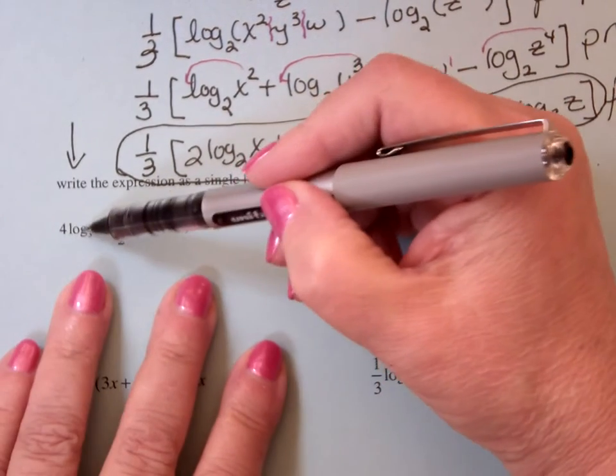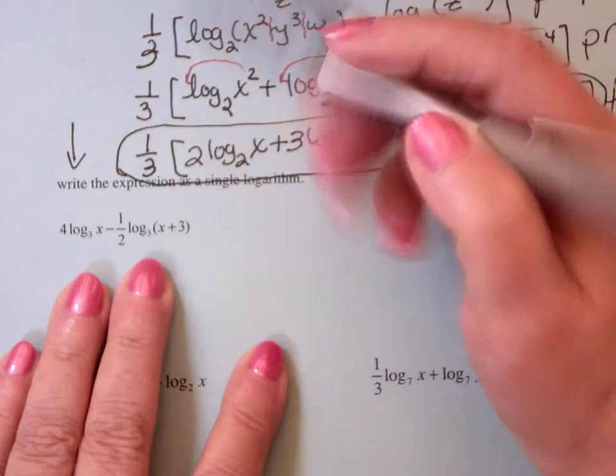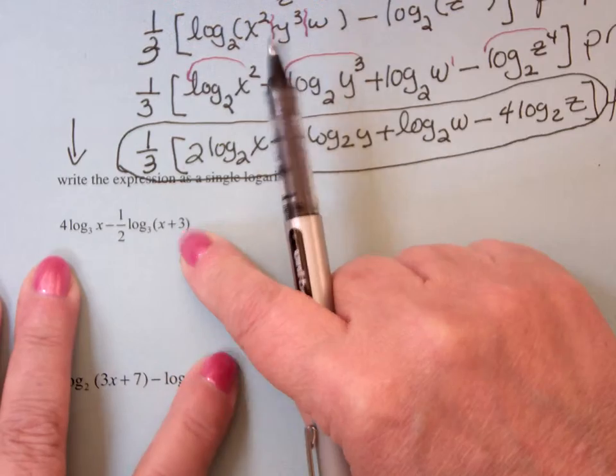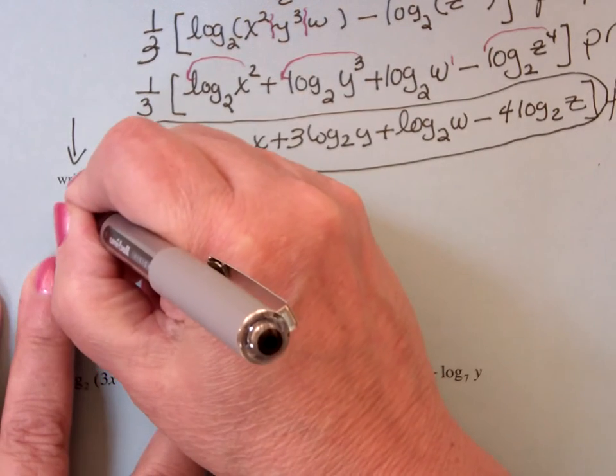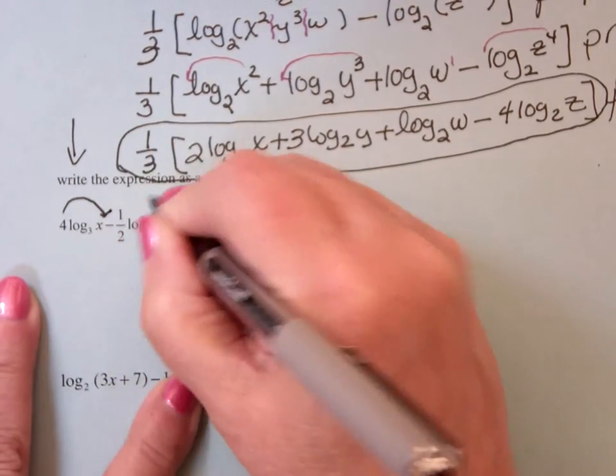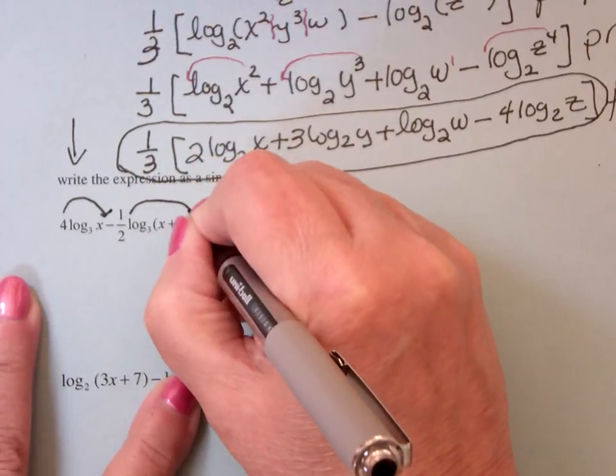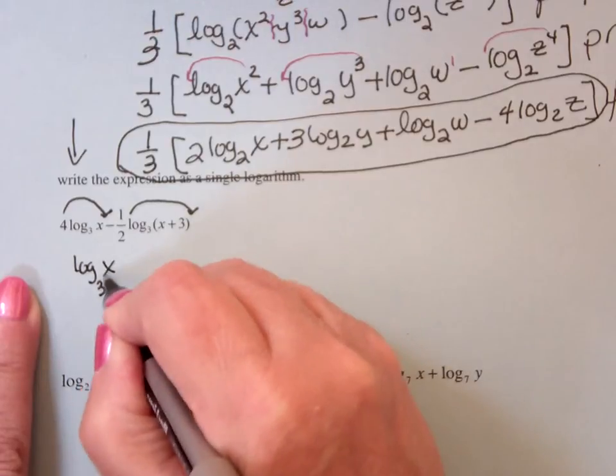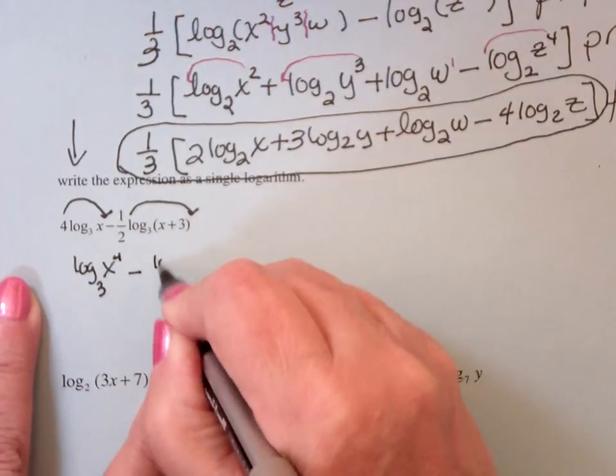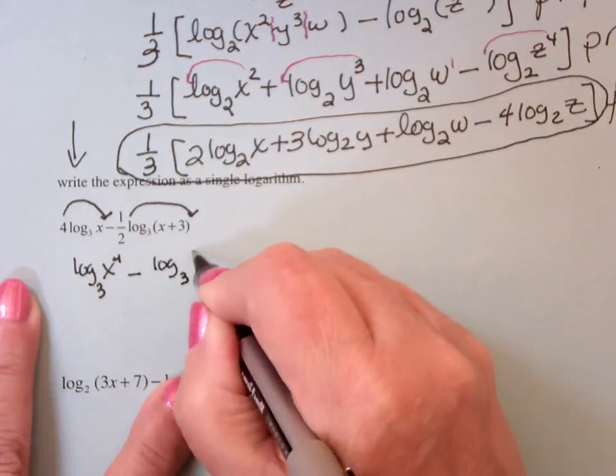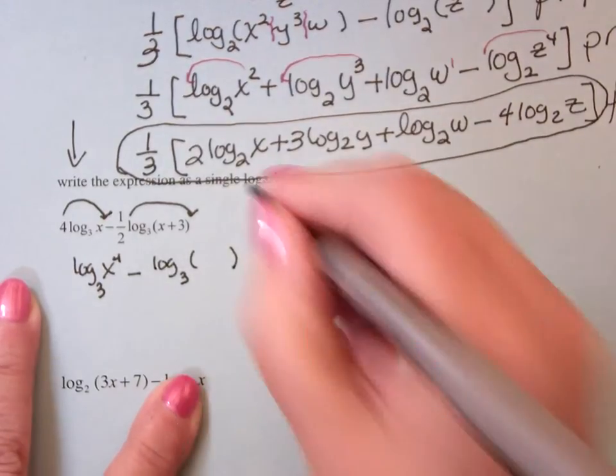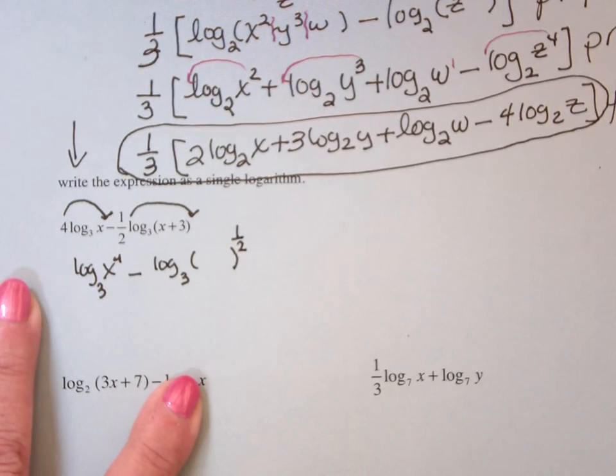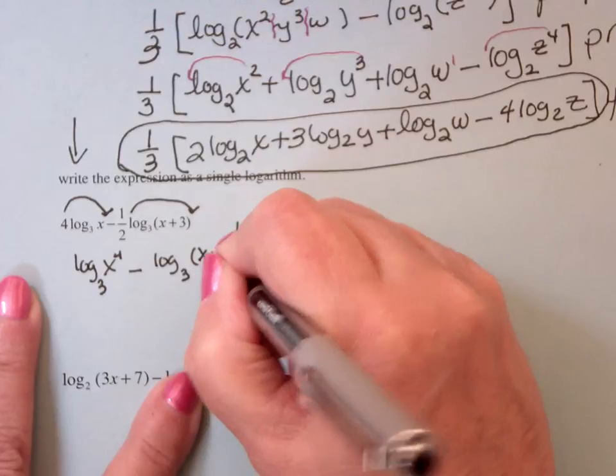We're looking at 4 log and 1/2 log. I can't use property 3 until I get rid of the 4 and the 1/2, so I'm going to bring the 4 up and the 1/2 up. This becomes log base 3 of x to the 4th subtract log base 3 of that set of parentheses to the 1/2 power, and what's in that set of parentheses is x plus 3.